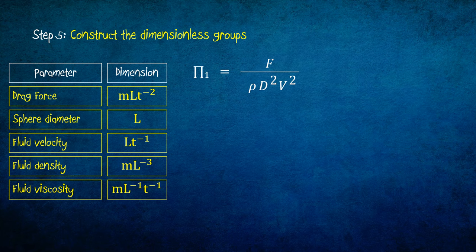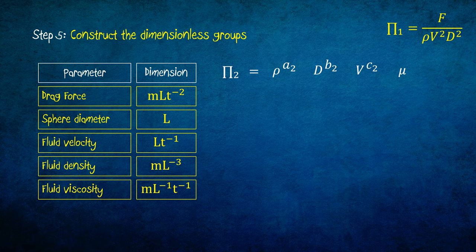Now let's work on pi 2. Just like what we did with pi 1, here we analyze the dimension of this relation. We determine a2, b2, and c2 in order to have dimensionless group pi 2.